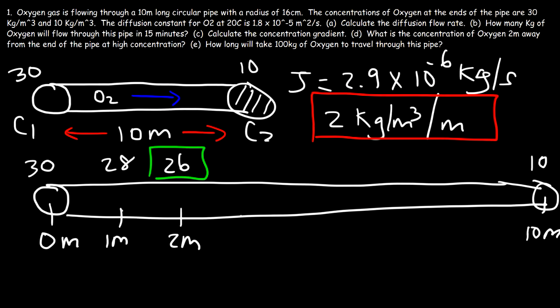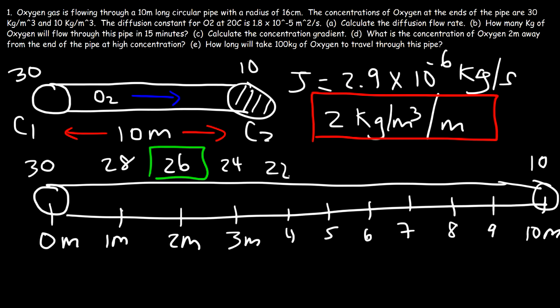Continuing along the pipe: at 3 meters it is 24, then 22, 20, 18, 16, 14, and at 10 meters it reaches 12 — wait, 10. As you can see, the concentration gradient tells us how much the concentration changes as we travel one meter along the pipe. It decreases by 2 every meter, confirming the gradient calculation.